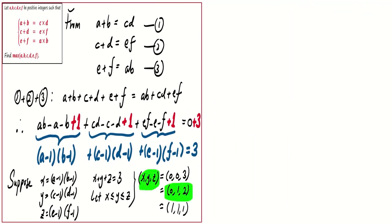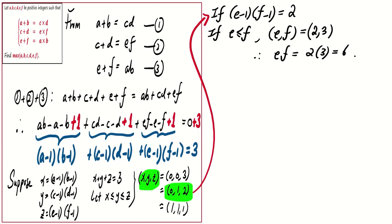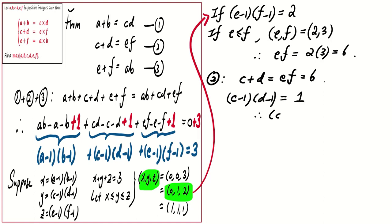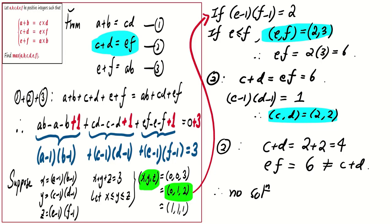Next we proceed to the case x, y, z equals 0, 1, 2. Here z equals (e minus 1)(f minus 1) equals 2, so with e less than or equal to f we get ef equals 6. From equation 2, c plus d equals ef equals 6. Since y equals (c minus 1)(d minus 1) equals 1, we get cd equals 2 and c plus d equals 4. But ef equals 6 is not equal to c plus d equals 4, so there is no solution in this case.